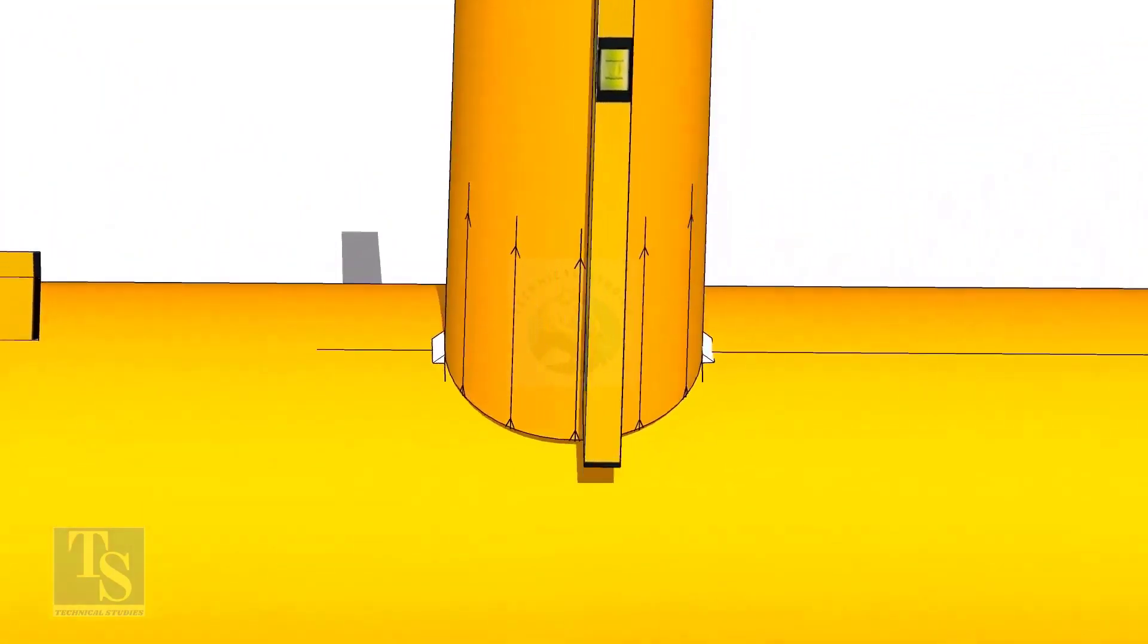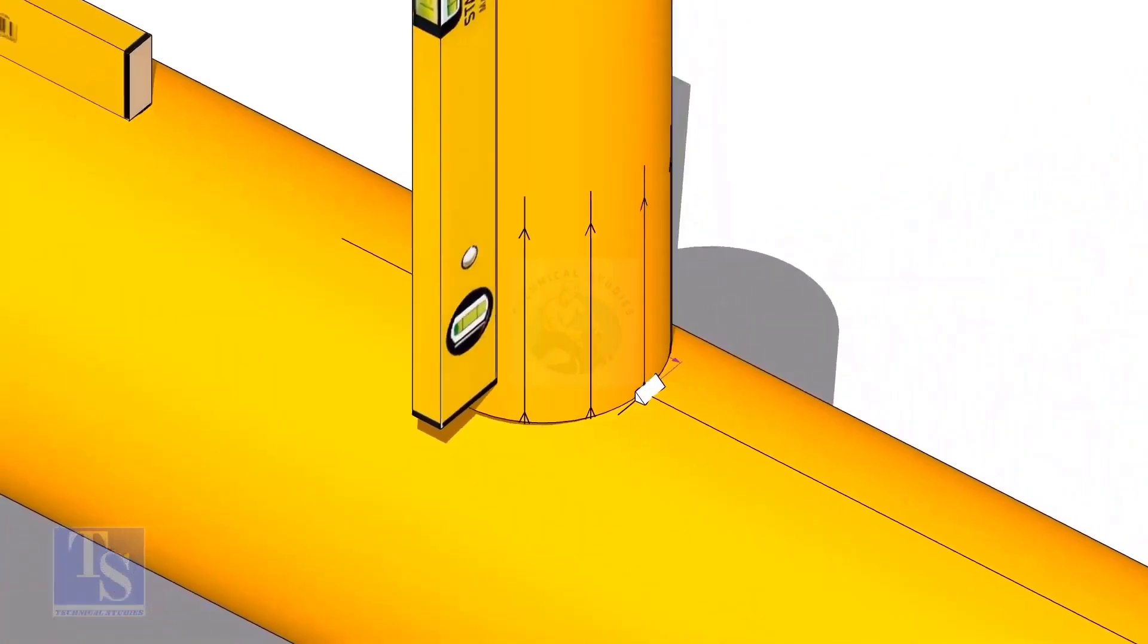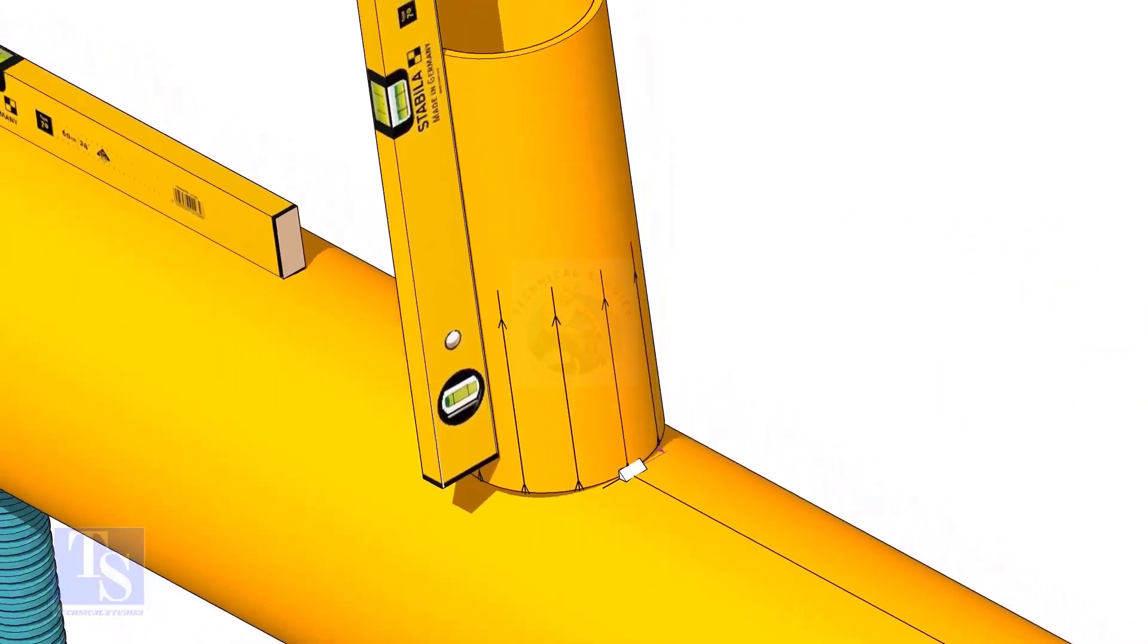Now make sure the pipe header and the branch are horizontally and vertically level. If required, strengthen the tack weld.